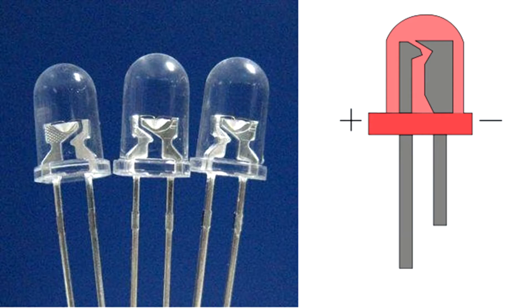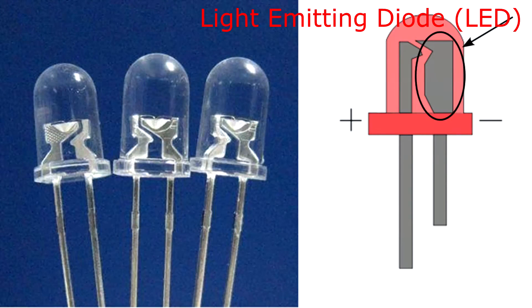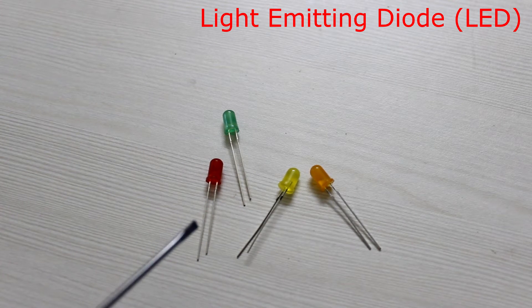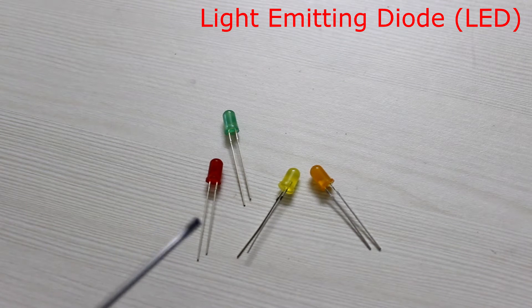You can also find the positive and negative terminals of the LED by looking into its electrodes. The thinner electrode is positive and the thicker electrode is negative. The specifications of the diode, that is the operating current and voltage, depend on the LED's size and color.